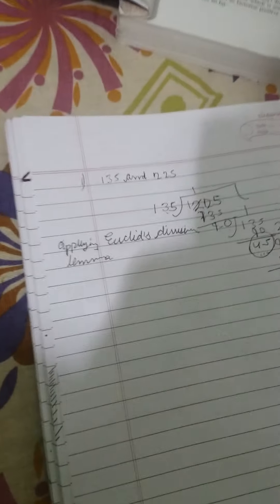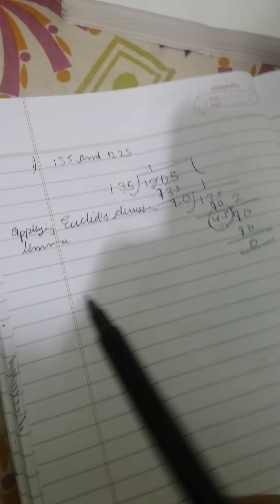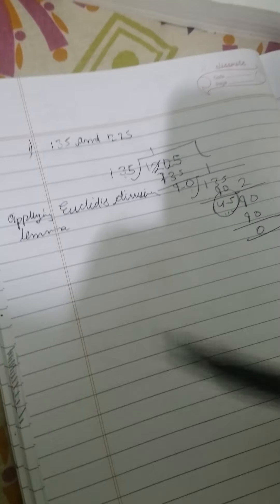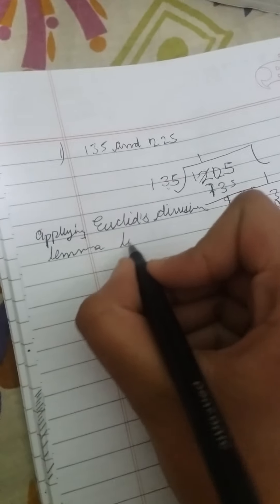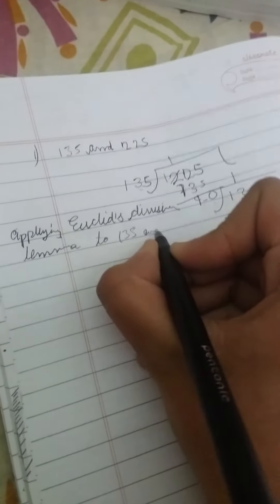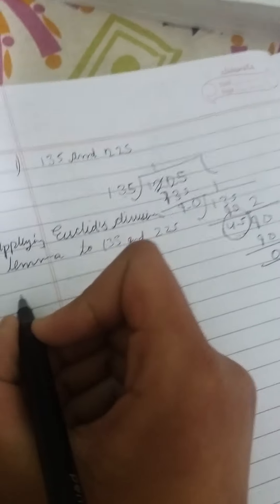These are the steps we've already done. The lemma is the one which is used to justify this. So when we write, we won't write Euclid's division algorithm, we'll write Euclid's division lemma. Applying Euclid's division lemma to 135 and 225.